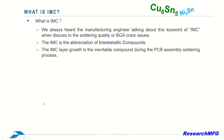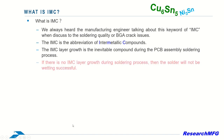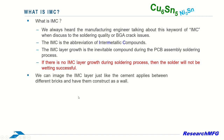The growth of the IMC layer is an inevitable compound during the PCB assembly soldering process. Without IMC layer growth during soldering, successful wetting of solder won't occur. To visualize this, think of IMC as cement that holds different bricks together to form a wall.